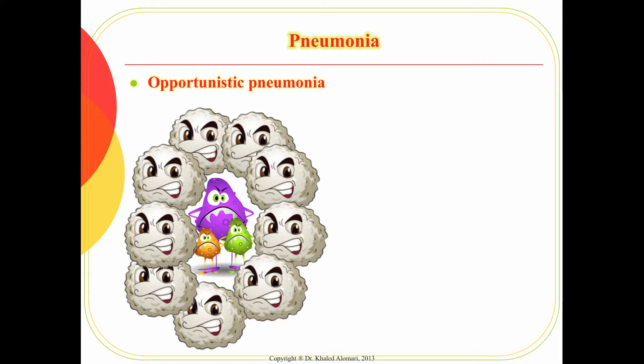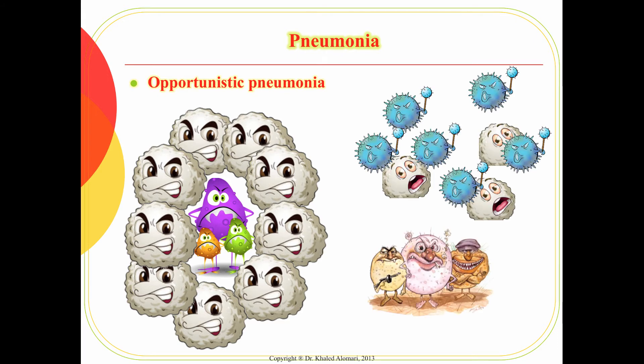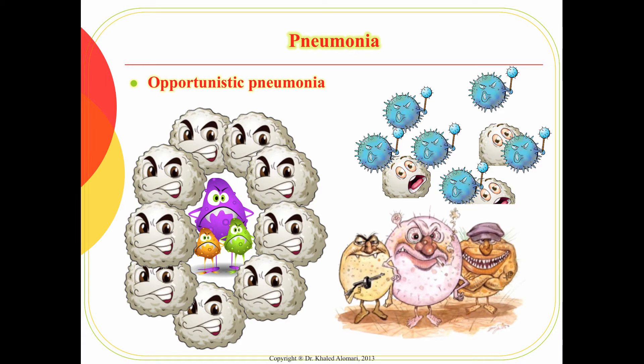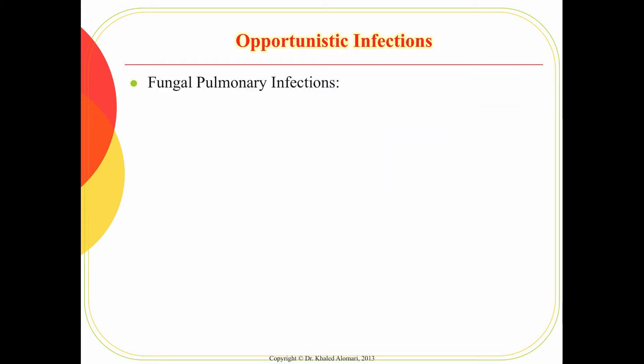The opportunity comes when the immune system is pretty low, and that's when these microorganisms become active again. An example is a patient with HIV who, after a long time of having a high viral load, now has low immunity. So it's a chance — an opportunity — for those microorganisms to come back and become active.